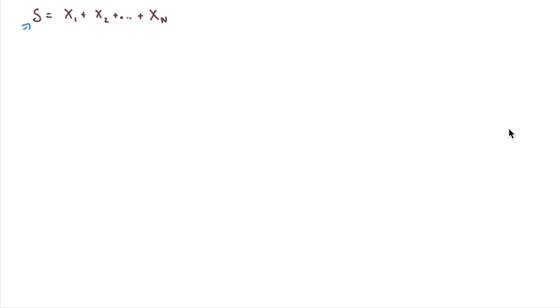So first off, we have S is equal to X1 plus X2 plus dot dot dot plus XN. Now remember, N is a random variable. It could be 3, it could be 10, it could be 100. We don't know.